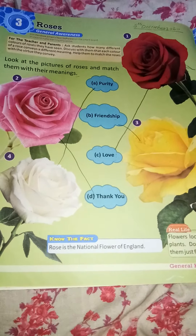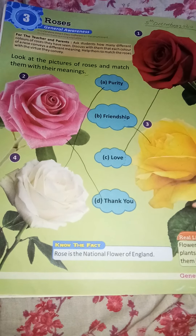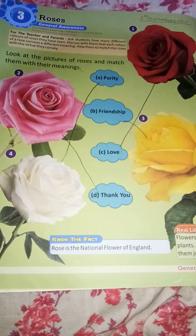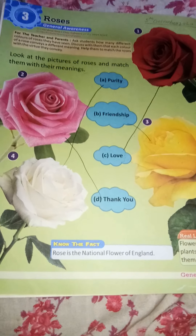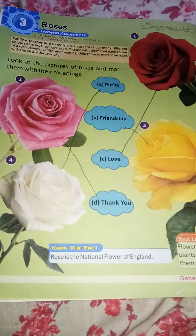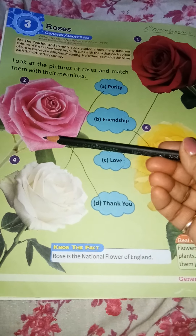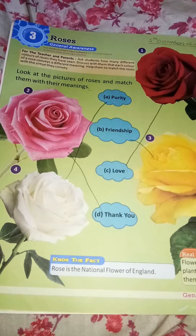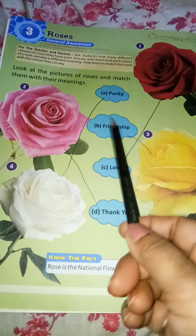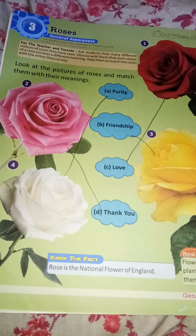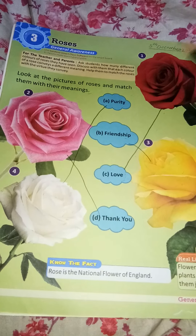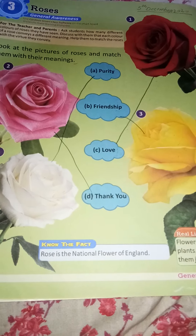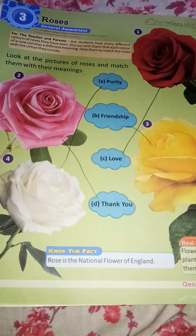Today's assignment is: draw different colors of roses in your GK copy and write down their meanings beside them. For example, draw a pink rose flower and in front of it write 'thank you.' If you draw a red rose, in front of it write 'love.' This is your today's assignment — complete it and send it to me.